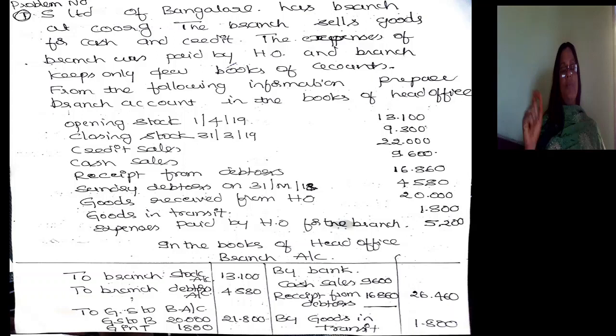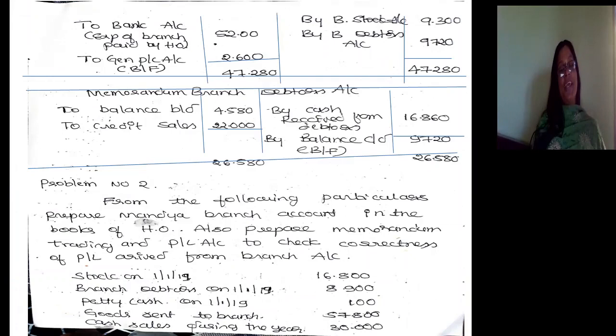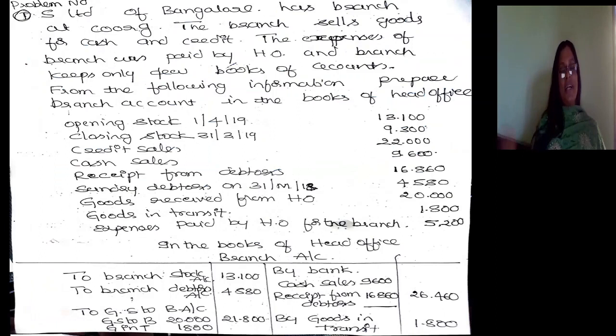For closing stock, it appears on the credit side. The journal entry is: Branch Stock Account Dr. to Branch Account 9,300. The credit side entry is recorded as 9,300.